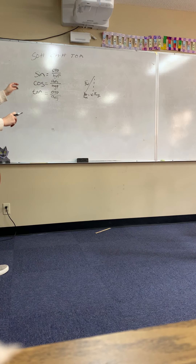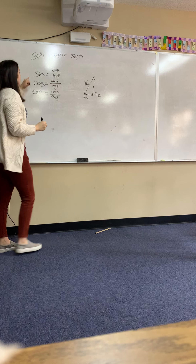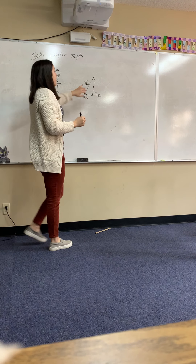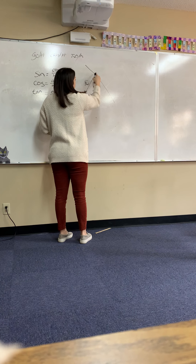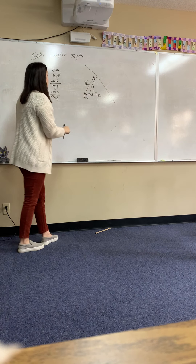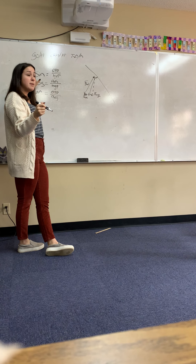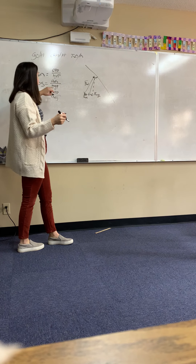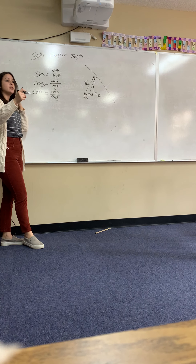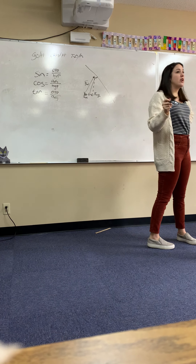SOH-CAH-TOA: sine is opposite over hypotenuse, cosine is adjacent over hypotenuse, tangent is opposite over adjacent. On our incline with the angle at the bottom: the x-value is opposite the angle, so x uses sine (opposite over hypotenuse). The inverse trig functions help you find the angle if you know the side lengths.